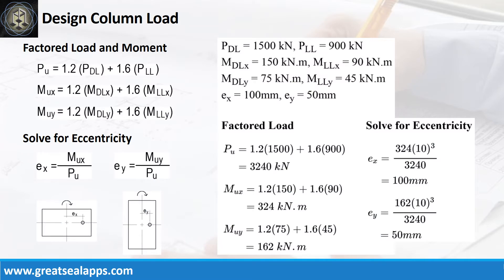Given axial dead load equals 1,500 kN and axial live load equals 900 kN, the factored axial load is 3,240 kN. At the x-axis, given moment dead load equals 150 kNm and moment live load equals 90 kNm, the factored moment is 324 kNm with eccentricity equals 100 mm.